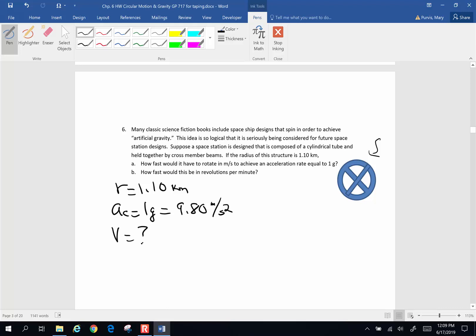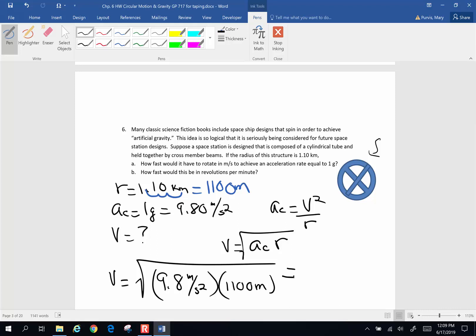So centripetal acceleration would be 1g, which would be 9.80 meters per second squared. And I want to know velocity, how fast tangential speed would need to be in order for it to orbit. Well, with that set of variables, that looks like I'm going to use centripetal acceleration as v squared over r. Solve for v. v is going to be the square root of centripetal acceleration times r, or the square root of 9.8 meters per second squared, times the radius. I've got to convert this from kilometers to meters. To go to meters, I'm going to go 1, 2, 3, or 1,100 meters. So this is going to be 1,100 meters. And when I multiply that out, 9.8 times 1,100 equals square root. I end up with 104 meters per second is the tangential velocity.